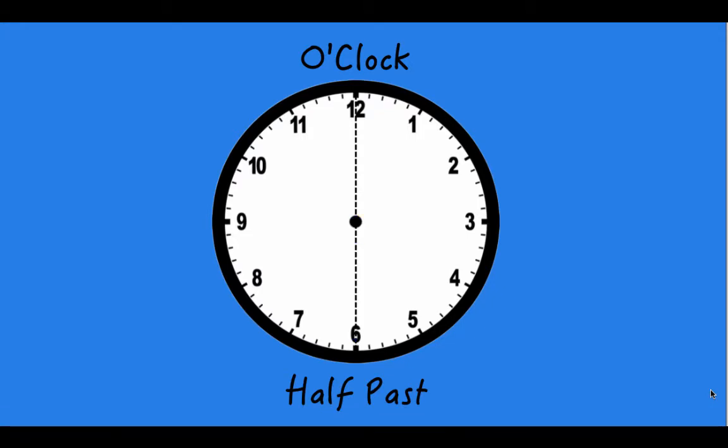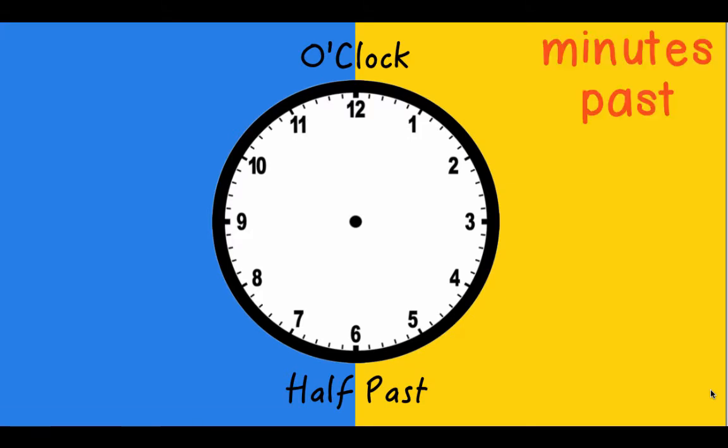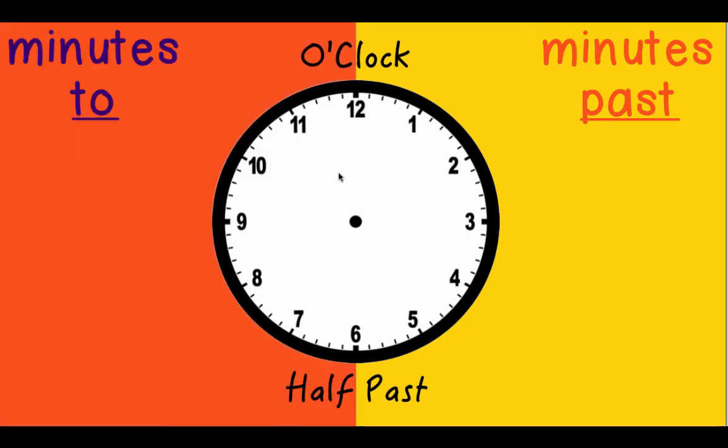If we think about our clock being divided into two halves, divided by the 12 and the 6, a line down the middle, we have two halves of the clock. One being our minutes past side of the clock, and the other being the minutes to side of the clock.